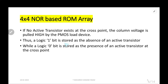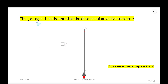Logic 1 bit is stored as the absence of an active transistor. Here R stands for row and C stands for column — you can also consider R as word line and C as bit line. As there is an absence of active transistor at this cross point, 1 is stored. If there is no active transistor present at a particular cross point, the information will be 1, because the supply voltage of 5V is directly connected to the output.